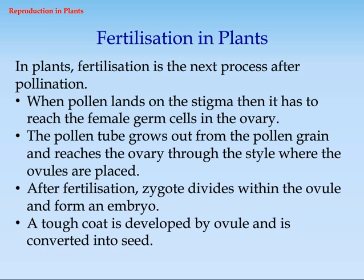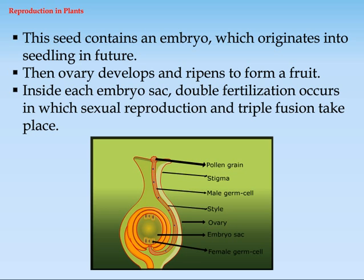Fertilization in Plants. Fertilization is the next process after pollination. When pollen lands on the stigma, it has to reach the female germ cells in the ovary. The pollen tube grows out from the pollen grain and reaches the ovary through the style where the ovules are placed. After fertilization, the zygote divides within the ovule and forms an embryo. A tough coat is developed by the ovule and it is converted into a seed. This seed contains an embryo which originates into a seedling in future. Then the ovary develops and ripens to form a fruit. Inside each embryo sac, double fertilization occurs in which sexual reproduction and triple fusion take place.